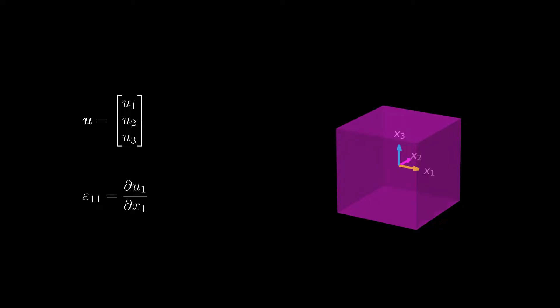Let's arbitrarily choose the value 0.3 for epsilon 11. The displacement field that we are looking for can be constructed by choosing the first component of the displacement field to be linear in x1 direction. That is 0.3 times x1 in this case.